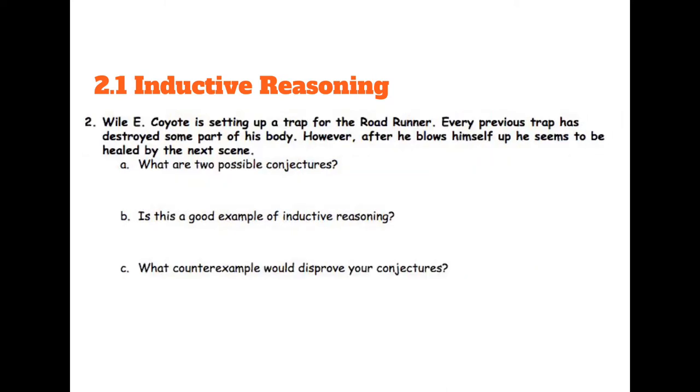Question number two, all about Wile E. Coyote. Wile E. Coyote is setting up a trap for the roadrunner. Every previous trap has destroyed some part of his body. However, after he blows himself up, he seems to be healed by the next scene.